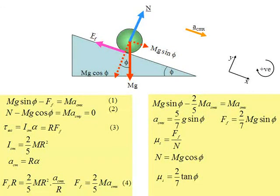Equations 1, 2, and 3 are still valid, but the acceleration of the center of mass is no longer equal to R alpha, and the velocity of the center of mass is no longer equal to R times omega. So we only have two equations — 1 and 3 — with three unknowns. Solving the problem of rolling with slipping therefore requires taking kinetic friction into account.